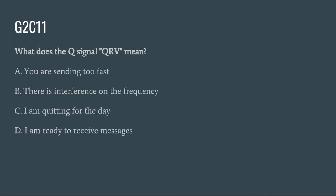G2C11: What does the Q signal QRV mean? A. You are sending too fast. B. There is interference on the frequency. C. I am quitting for the day. Or D. I am ready to receive messages. The correct answer is D: I am ready to receive messages.